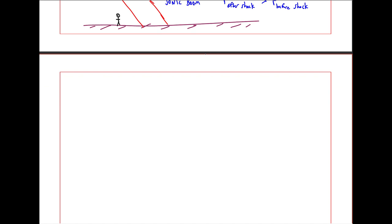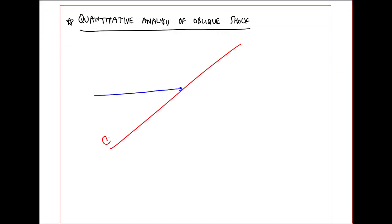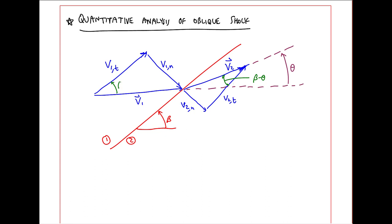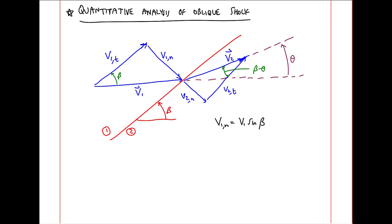Now let's start to look at oblique shocks quantitatively. Here's our oblique shock with one before the shock and two after. We'll let V1 be the velocity approaching the shock. The shock itself is inclined at shock angle beta. And the flow turns at some smaller angle, the turning angle theta. Let's split this velocity V1 into two components. V1T, which is tangent to the shock, and V1N, which is normal to the shock. We'll do the same with V2. Doing a little bit of trig, this angle is beta minus theta. This angle is beta. So we can write V1N equal V1 sine beta. V1 tangential V1T is V1 cosine beta.